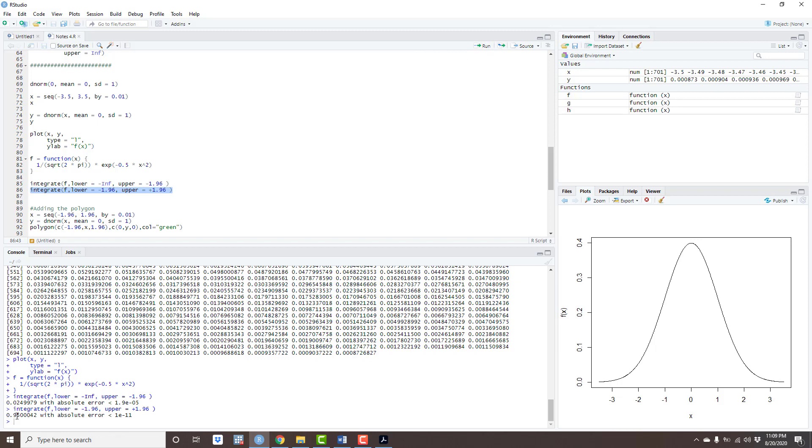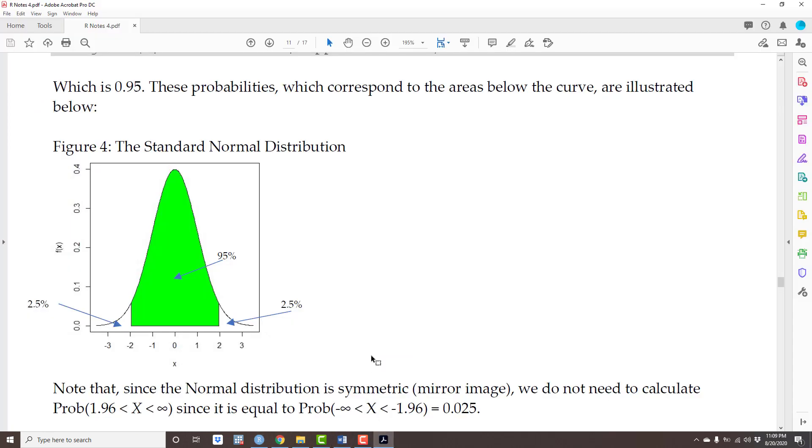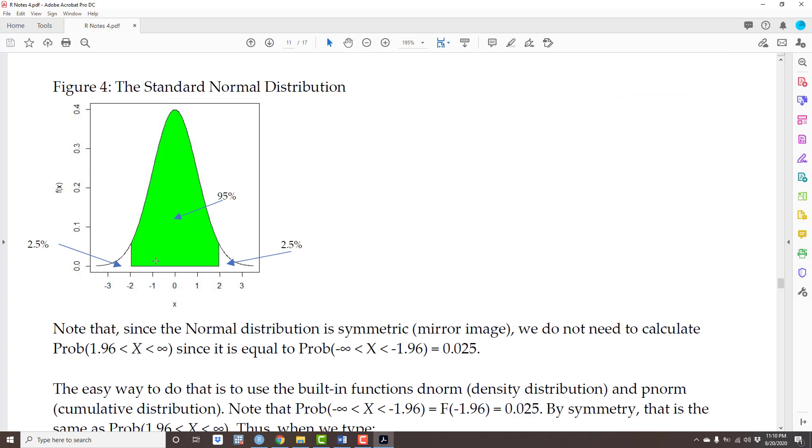Okay, this is going to be extremely important for us later, so keep that in mind. Meaning the critical values -1.96 and +1.96 and the fact that if you randomly draw an x from a standard normally distributed population, the probability that x is in between these two critical values is actually 95 percent.